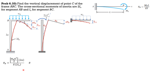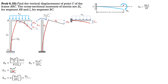Therefore the vertical deflection at C = A × theta B + delta C1 = A × W₀A³/2EI₀ + W₀A⁴/8EI₀ = W₀A⁴/2EI₀ + W₀A⁴/8EI₀ = 5W₀A⁴/8EI₀ downward.